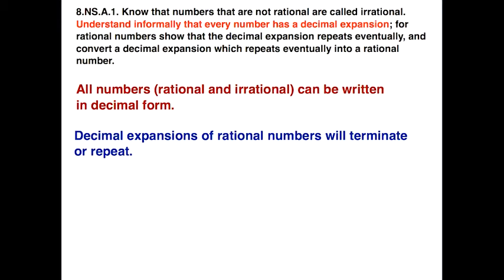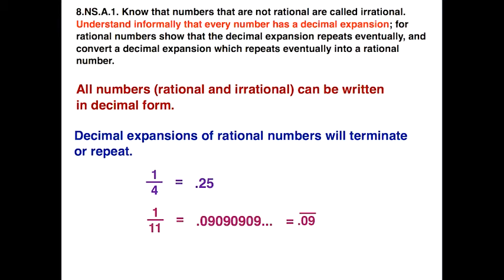Decimal expansions of rational numbers are either going to terminate or repeat in some type of pattern. For example, 1 over 4 would be 0.25. 1 over 11, on the other hand, has a repeating pattern where we have two digits that repeat: 0 and 9. Rather than write all those repeating numerals, one way of expressing a repeating decimal is to put a bar over the repeating digits only. That bar is called a vinculum.